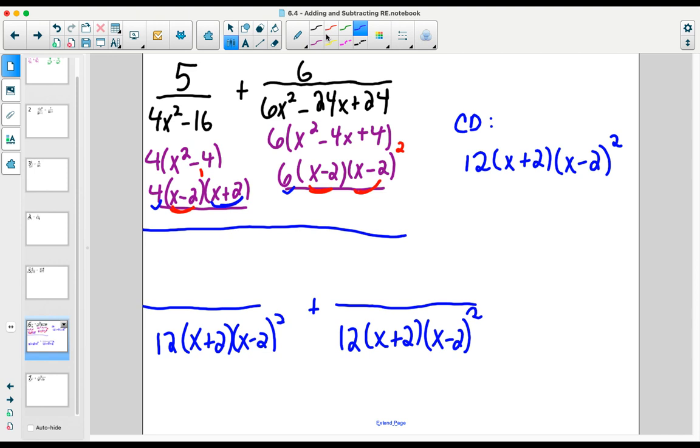Looking at the first rational expression, we compare this new common denominator to our previous denominator. We see that we're going to need, in addition to the five that was already in the numerator, an additional factor of three, because four times three makes 12. And we're going to need an additional x minus two to cover for that extra x minus two that was in the denominator of the other rational expression.